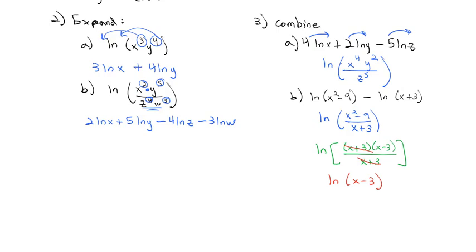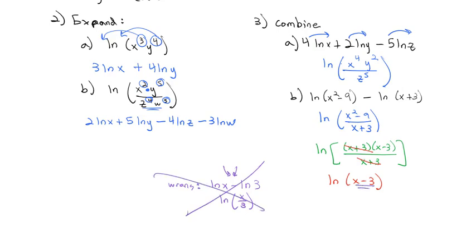Notice we cannot distribute log through the parentheses. It is not natural log of x — that is wrong. And it is not ln(x) − ln(3) either — that would be wrong, because subtraction means division: ln(x/3). We don't have that; we have x − 3. Never distribute log through parentheses. Only use the log properties to expand and contract, which works with products and quotients, not adding and subtracting.